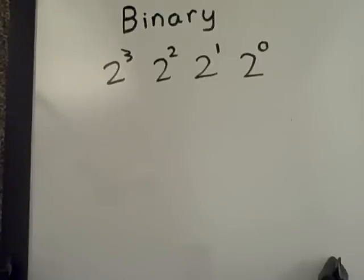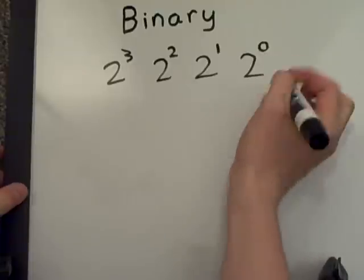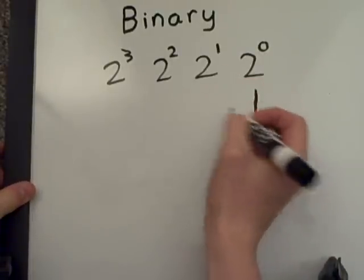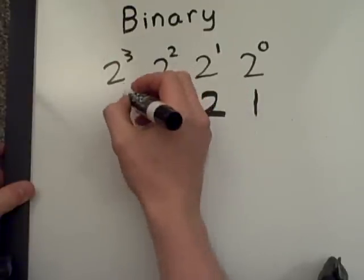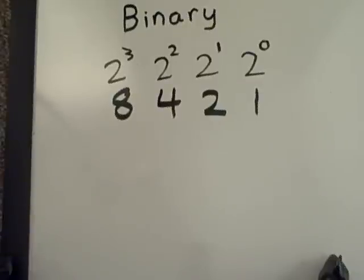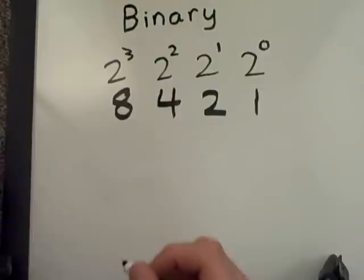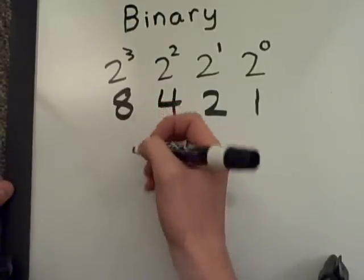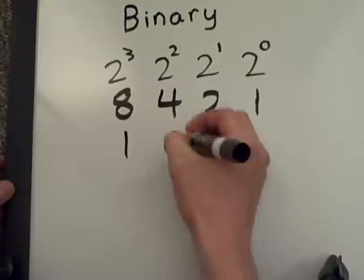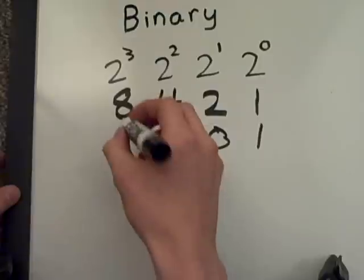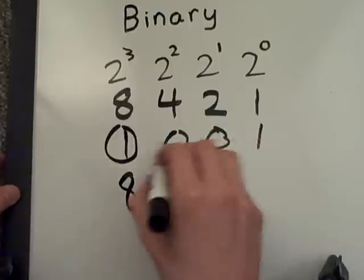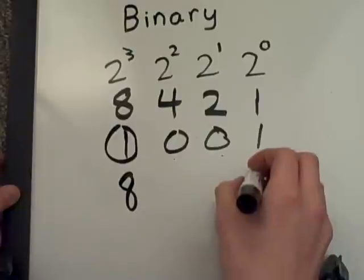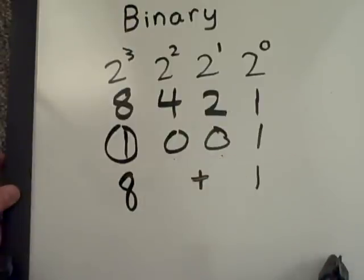Binary is the number system of the base unit of two. Two to the zero would be one. Two to the one would be two. Two to the two would be four. Two to the third power would be eight. These values are represented through binary using ones and zeros. In the example: one, zero, zero, one — this one on the left translates to eight. Since the middle two are both zero, we ignore those. The rightmost one stays a one. Add those two together and that stands for nine.